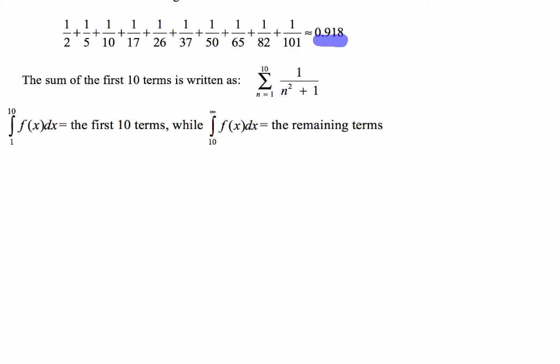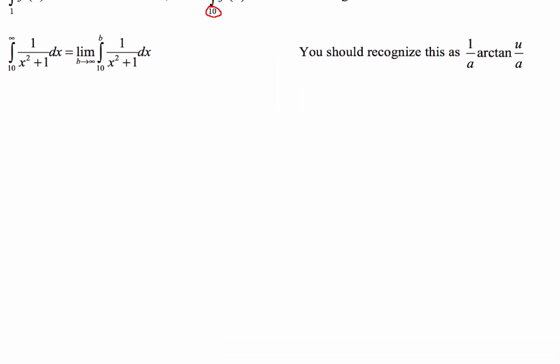Sum from 1 to 10 of 1 over n squared plus 1. Now, that's the first 10 terms. So we've got to figure out the remaining terms. And notice, your lower limit of integration starts at 10, while it concludes with infinity up here at the upper limit of integration. So we've got to figure out the sum of what's left. And that's where we use the limit process. Now, in working with this, you want to recognize that x squared plus 1 is going to be the arctangent integral.